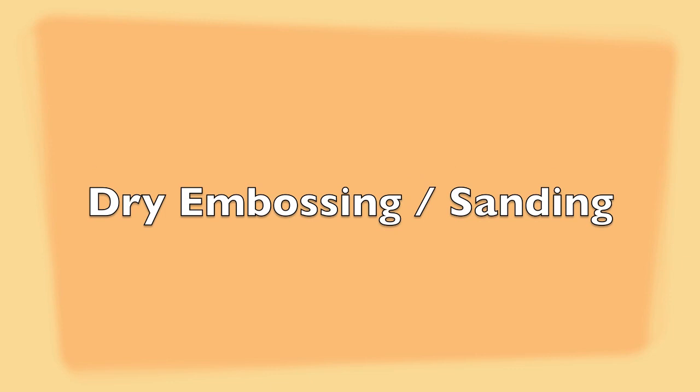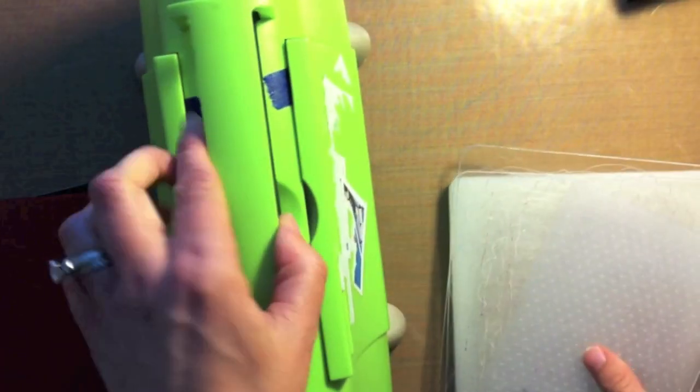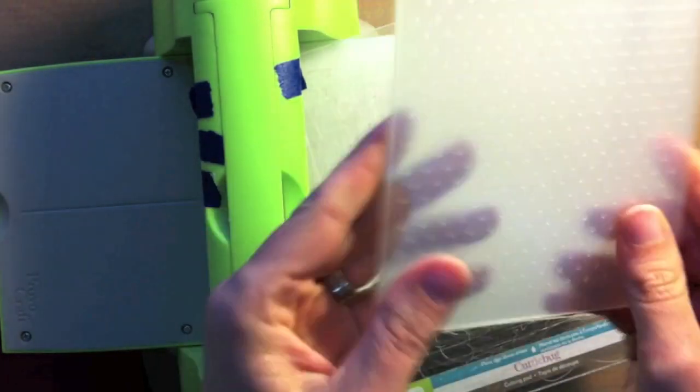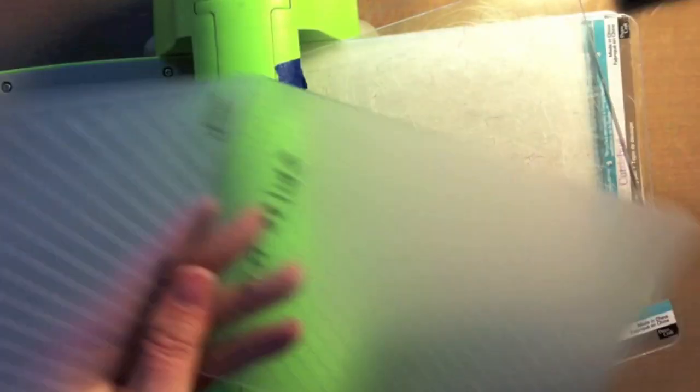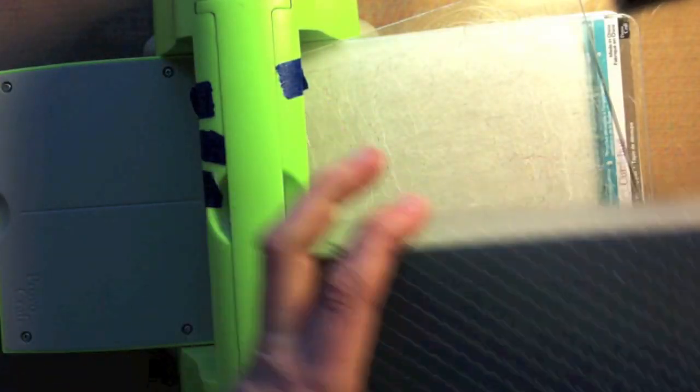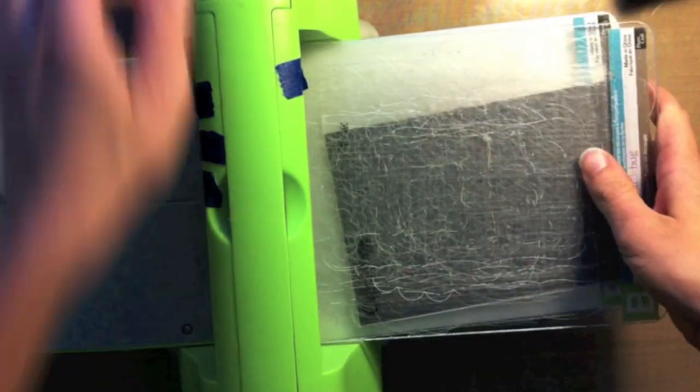Let's show you a couple different techniques. Here's dry embossing and sanding. I'm just using my Cuttlebug. I've got my A plate and B plate and I'm using the Cuttlebug Swiss dots folder. I'm just putting in my cardstock - you want to put in the side up that you actually want to have the embossed image on.